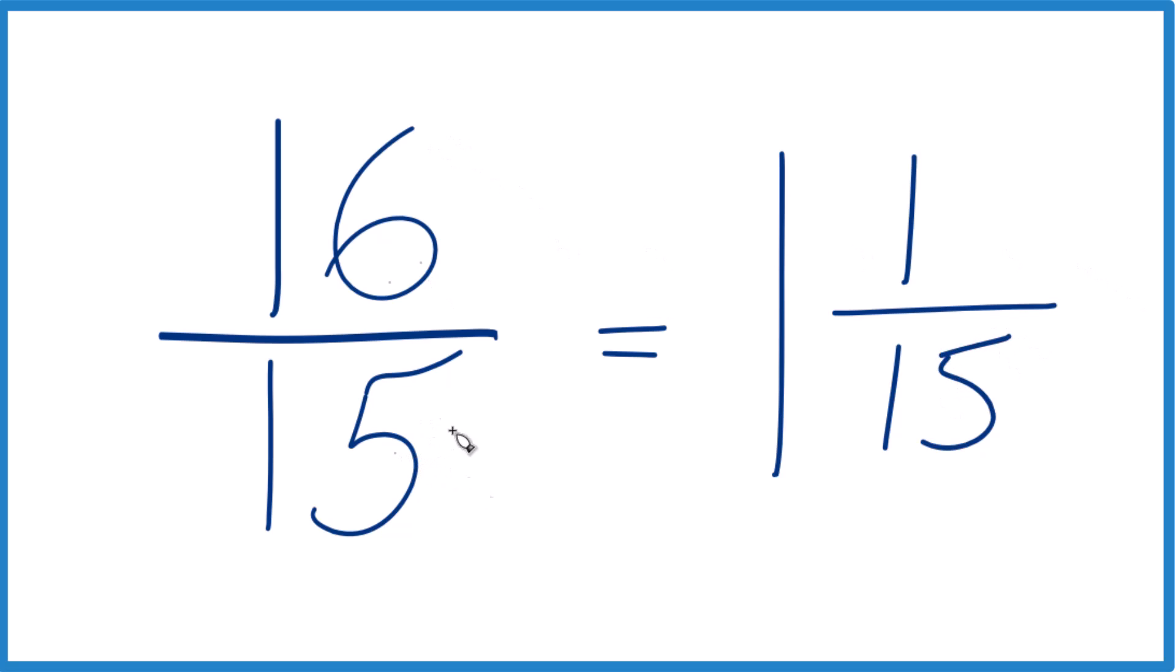16 fifteenths. The fraction, this is an improper fraction because the numerator is larger than the denominator. 16 fifteenths, that's equal to the mixed number 1 and 1 fifteenth.